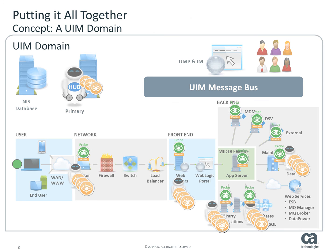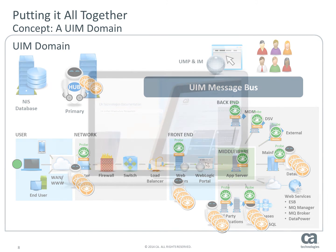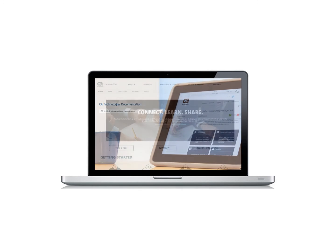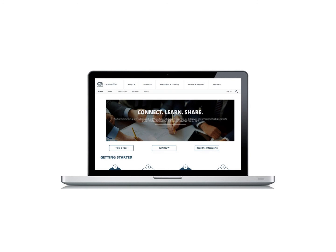Finally, all of the UIM software components are grouped together into a logical set called a domain. The domain is created when you install the UIM server software. A site is normally set up with one domain, and then various security aspects such as user profiles, permissions, and access rights are distributed within the domain. For more detailed information about CA Unified Infrastructure Management, refer to the documentation wiki, or visit the UIM community to join in the discussion. The links can also be found in the YouTube description located below this video.